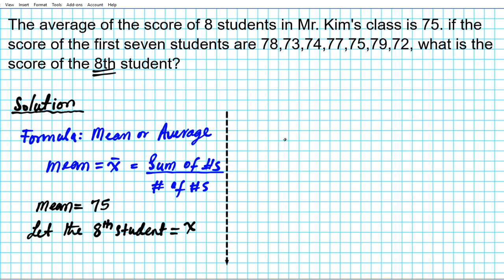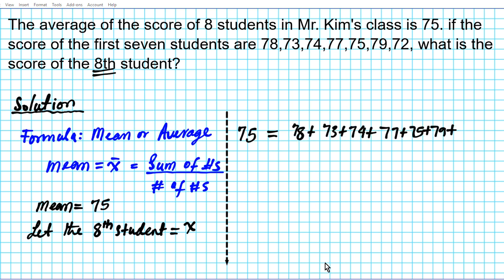We're going to use the formula to set up an algebraic equation. The mean, 75, equals the sum of numbers — which is 78 plus 73 plus 74 plus 77 plus 75 plus 79 plus 72 — plus that 8th number we don't know, X. All of that divided by the total number of numbers, which is 8.